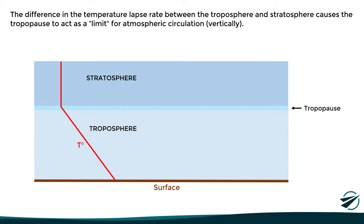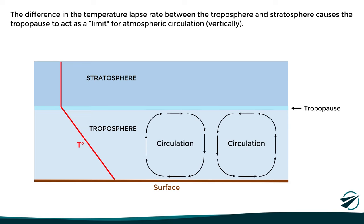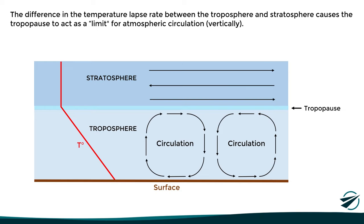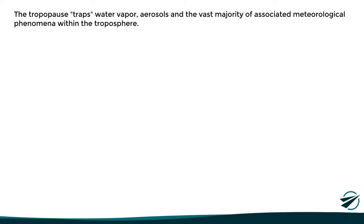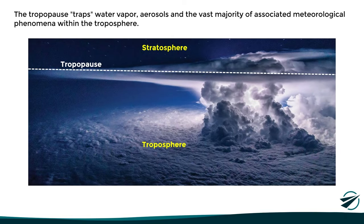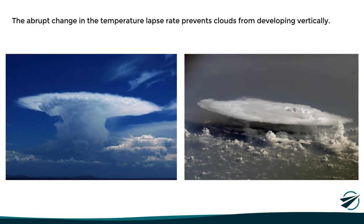The main characteristic of this layer is that the temperature stops decreasing with altitude. This difference in the temperature lapse rate between the troposphere and stratosphere causes the tropopause to act as a limit for vertical atmospheric circulation. The air in the troposphere is unstable and tends to move both horizontally and vertically. However, once the air reaches the tropopause and the temperature stops decreasing, it becomes more stable, restricting vertical movements and tending to flow horizontally only. In simpler words, the tropopause acts as a kind of cap that traps water vapor, aerosols, and the vast majority of meteorological phenomena within the troposphere, preventing them from extending up to the stratosphere. A clear example is the vertical development of some clouds, where the abrupt change in the temperature lapse rate prevents these clouds from continuing to develop vertically into the stratosphere.